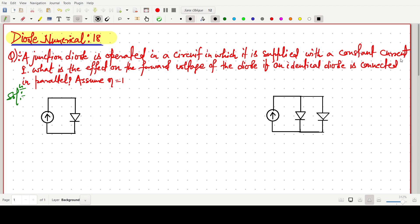So a junction diode is there, which is operated in a circuit with a constant current I. So this current is I given. This one is diode D1 and the voltage will be VD1.